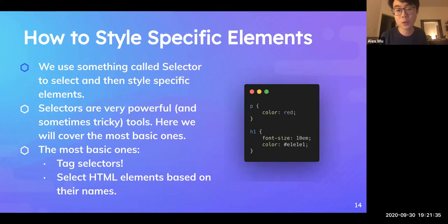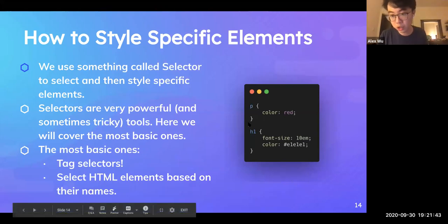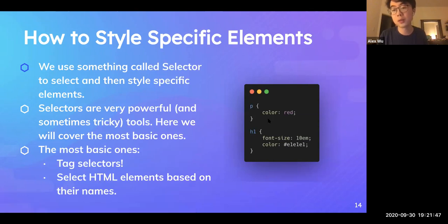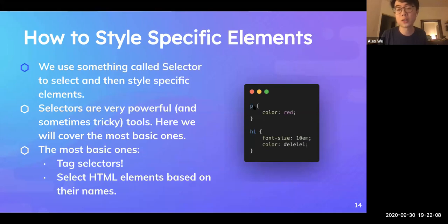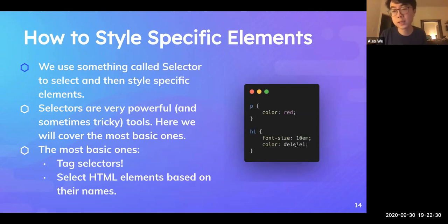The most basic selector is called the tag selector, which we already demonstrated. Looking at the image on the right, there are two styles — one for the P tag (paragraph) and one for H1. The tag itself is the selector. Using 'p' as a selector means selecting all paragraph elements in the HTML document and applying color red. Inside the curly brackets, you have the attribute, then a colon, then the value — which is red — and you separate different attributes with a semicolon.